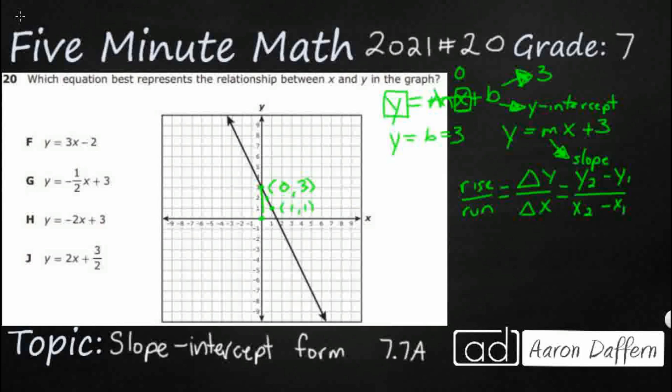So that one comma one is going to be my y two and my x two. My first y is going to be three, and my first x is going to be that zero. And if we get that, look at that: negative two over one, which means it's y equals negative two x plus three, answer H.